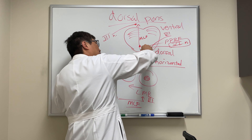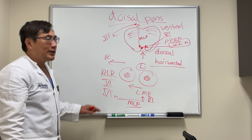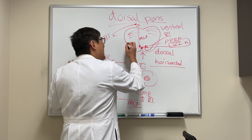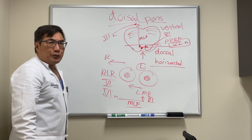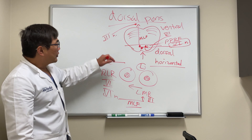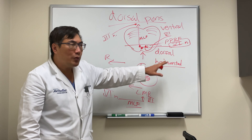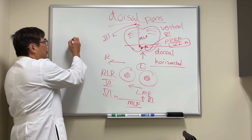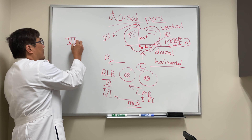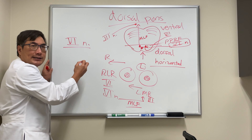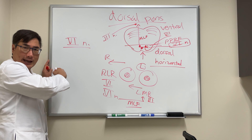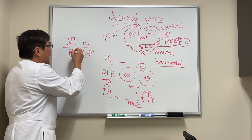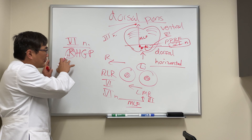In the dorsal pons, we also have the seventh nerve, and the seventh nerve fascicle wraps around the dorsal part of the sixth nerve nucleus. These constitute our classic dorsal pontine syndromes. The dorsal pontine syndromes are going to be horizontal gaze with or without a seventh nerve palsy. The first thing it could produce is it could ding out the sixth nerve nucleus. If it dings out the nucleus, we won't be able to perform horizontal gaze — that will produce a right horizontal gaze palsy if the lesion is on the right side.